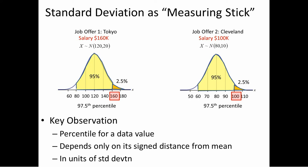This suggests that we define a new random variable. We're not really interested in x — we're interested in the distance of x from the mean in units of standard deviation. So we subtract mu from x and divide by the standard deviation. This creates a new variable called the z-score. Notice: 160 minus 120 divided by 20 gives z equals 2, and 100 minus 80 divided by 10 also gives z equals 2. It's the z-score that determines the percentile — not the mean and not the standard deviation.